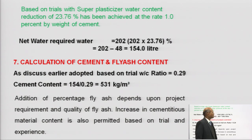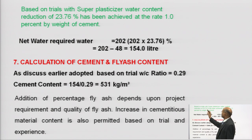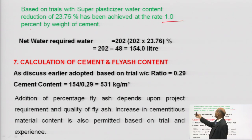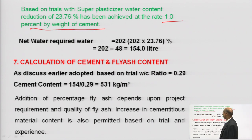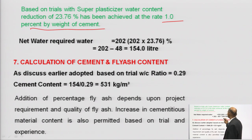Based on trial with super plasticizer (Cika Made admixture at 1% by weight of cement), there is a 23.76% reduction in required water. So water content = 202 × (1 − 0.2376) = 154 litres. Therefore, water required is 154 litres.